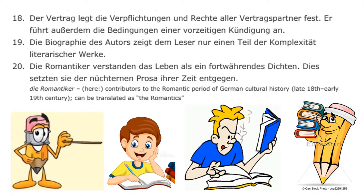'Die Romantiker' refers to contributors to the Romantic period of German cultural history — roughly the late 18th to early 19th century. We can also translate this as 'the Romantics.' That was the era of Kant and Hegel. A big part of Hegel's aesthetics, or his lectures on fine art, is how the Romantic era is the third and final phase in the development from symbolic to classical and then finally Romantic art. Keep that in mind as you translate. I'll pause now — do these translations and we'll meet back in a little bit.